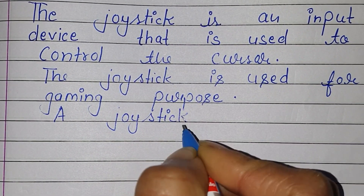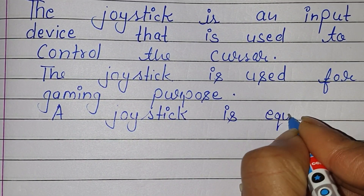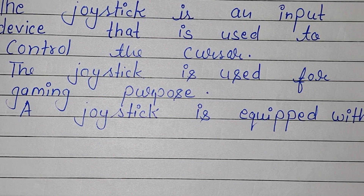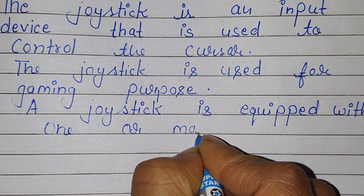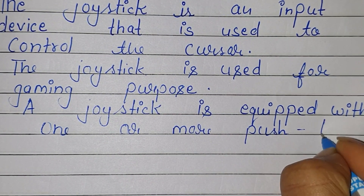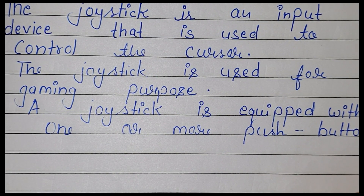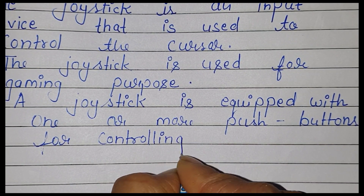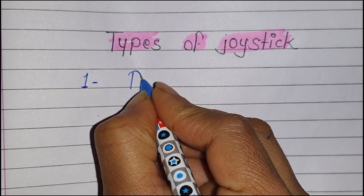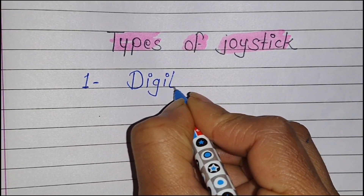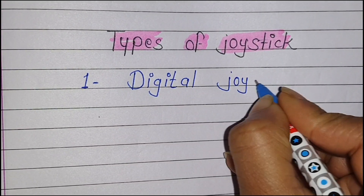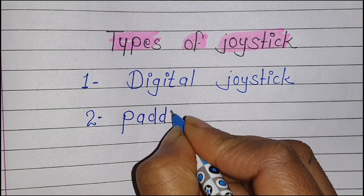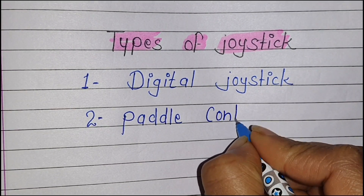A joystick is equipped with one or more push buttons. Types of joystick: number one, digital joystick. Number two, pedal controllers.